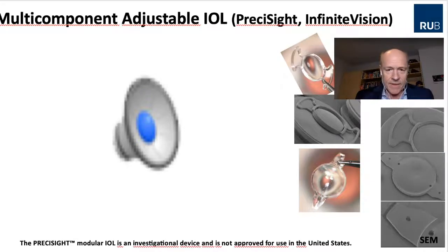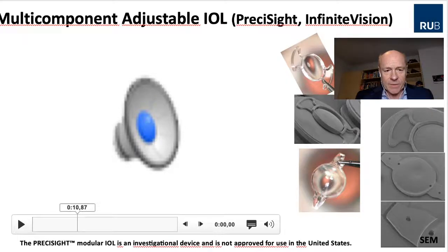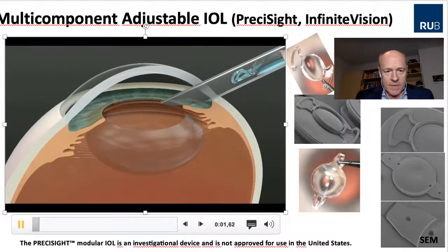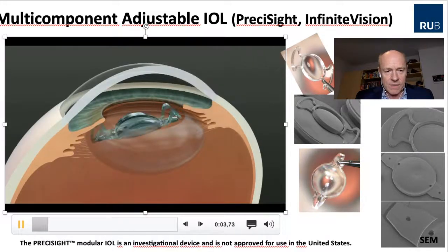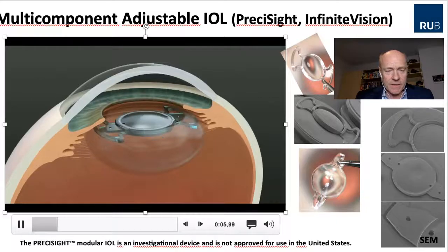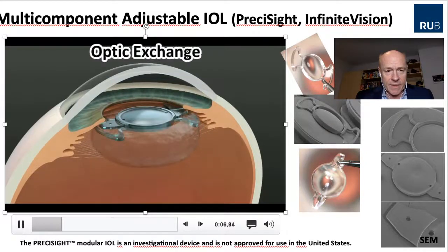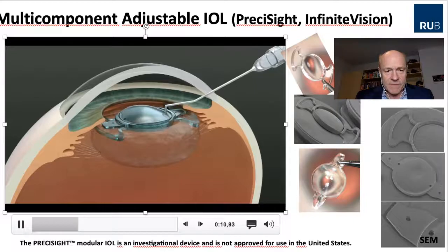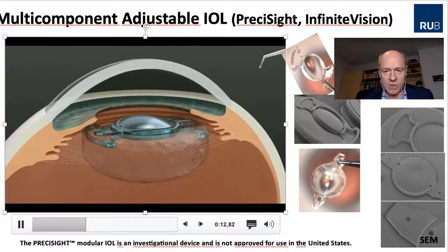The second one is the Precisight lens, which also has a basic lens design. The second part — the optic — is implanted into this basic design. As seen in the animation, both the basic optic and the optic are implanted into the bag, and then OVD is injected at the interface, facilitating IOL exchange.